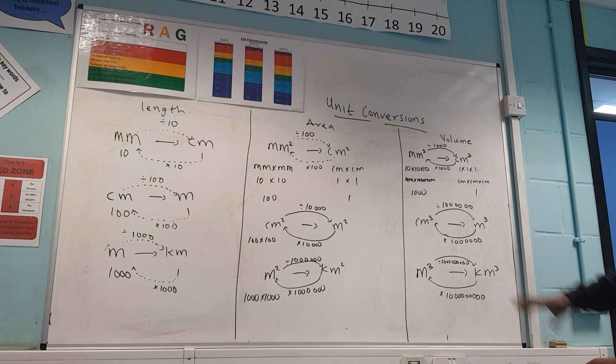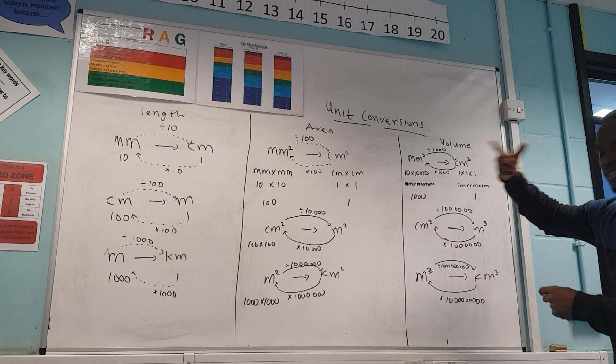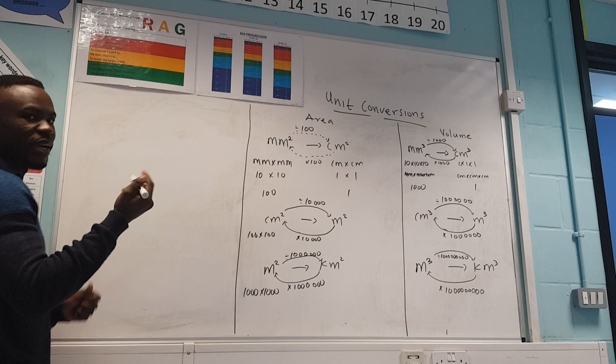That is your unit conversions. All you have to remember is the length conversion. When it says area — squared — then square the numbers. If it says cubed, you know what to do. Let's do examples for each one of them, and that will be the end of the video. Try to remember the simplest ones.